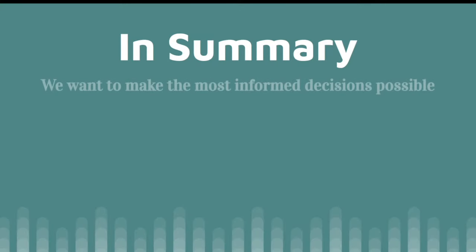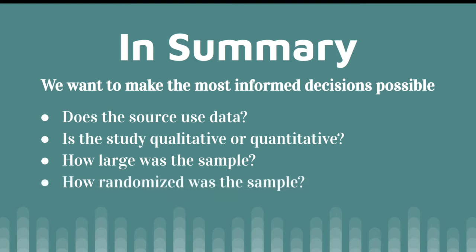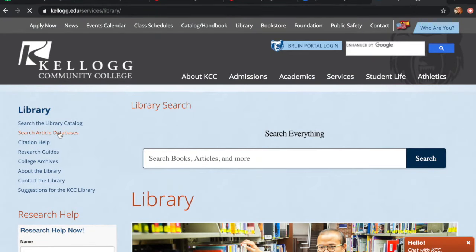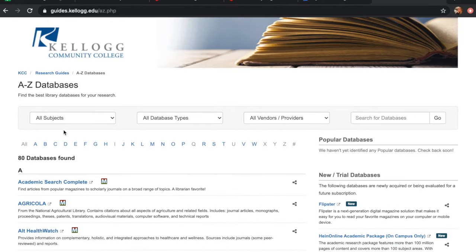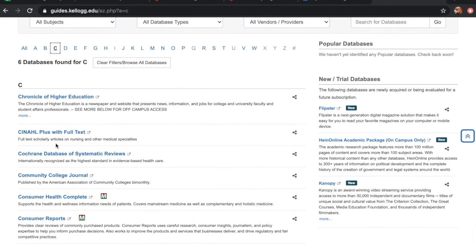So to summarize, the main idea here is to ensure that healthcare decisions are made based on as much evidence as possible. Pay attention to: one, if the source uses data; two, if the source is using a qualitative or quantitative research method; three, how large and how randomized the population studied was; and four, whether you're looking at a single study or a systematic review. If you're looking for systematic reviews, our database Cochrane is a great place to go, since systematic reviews are the only thing you'll find there. You can find a link to Cochrane in the description, or on almost any allied health research guide.